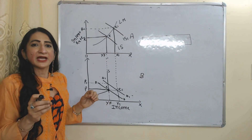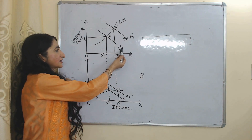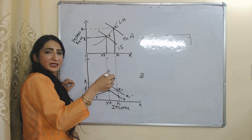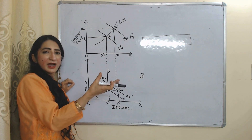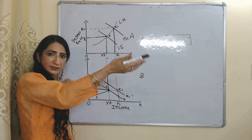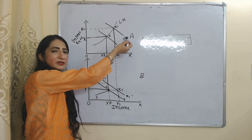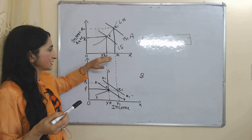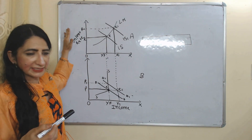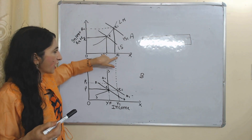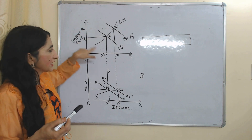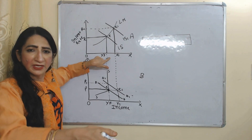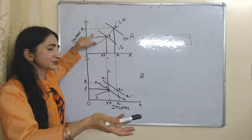Now suppose the government increases expenditure. As government expenditure increases, our IS curve shifts rightward — this is our new IS curve — because government expenditure influences equilibrium in the goods market. After government expenditure, demand for goods and services increases, which is why our IS curve shifts rightward. Our new equilibrium point is E1. At this equilibrium point, our income as well as interest rate have both increased — income has increased from Yf to Y1 and interest rate has increased from r to r1.